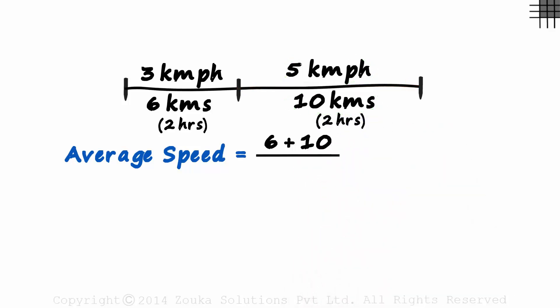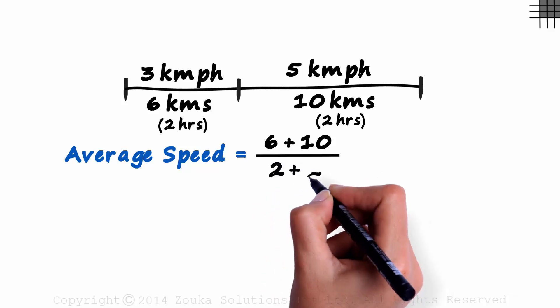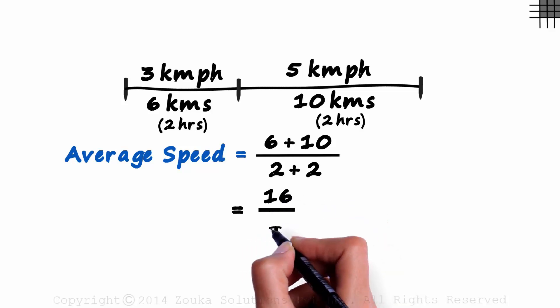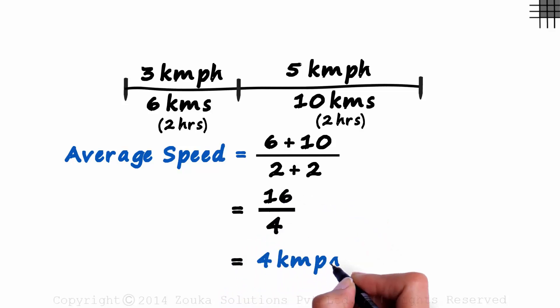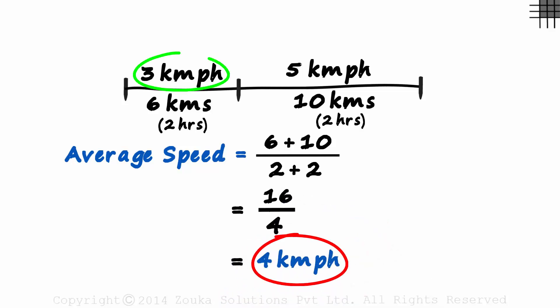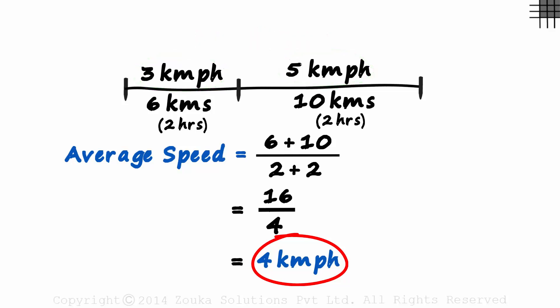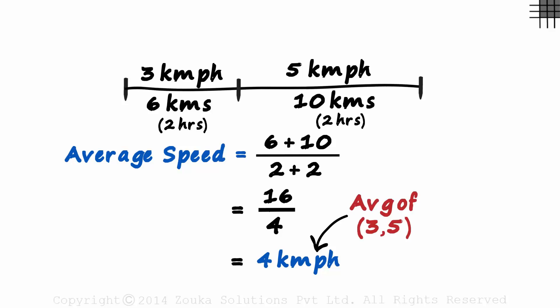So the total time equals 2 plus 2, or 4 hours. The average speed equals 16 over 4, which is 4 kilometers per hour. Is this closer to 3 or to 5? It's equidistant from each — because he is traveling for the same time at each of the speeds. Hence this is simply the average of the individual speed values. We will look at more examples of average speed over the next few sessions.